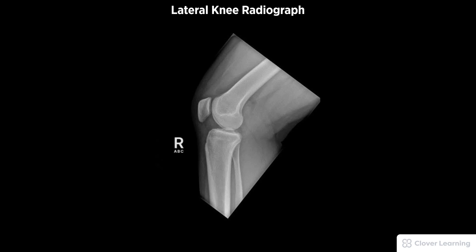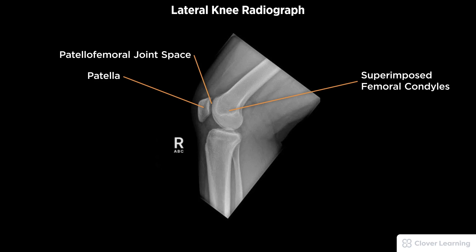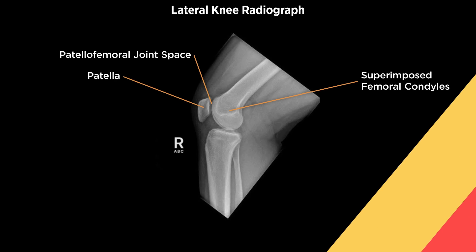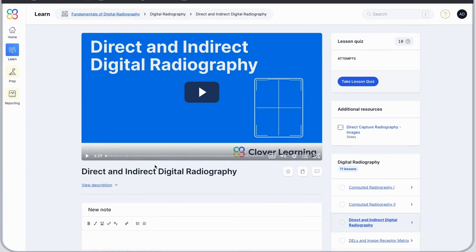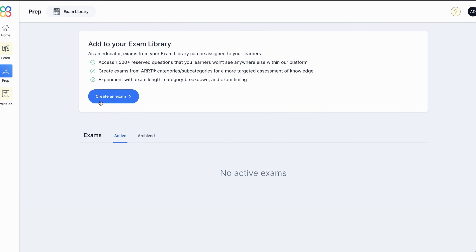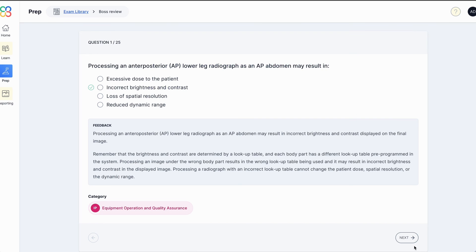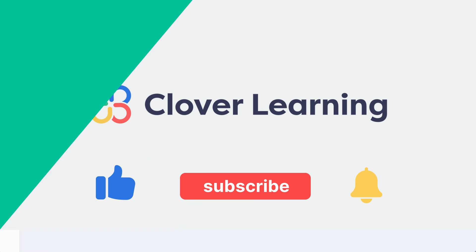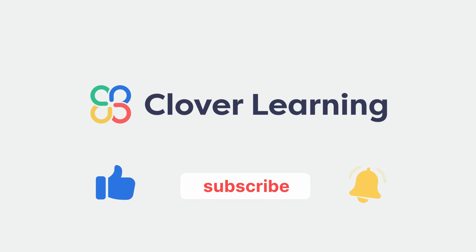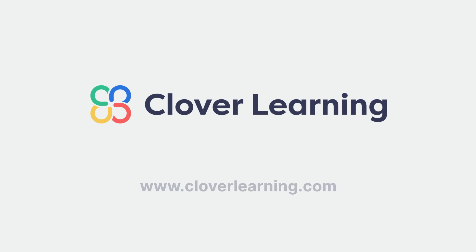A diagnostic lateral knee radiograph must be free of motion and rotation, demonstrating superimposed femoral condyles, patella in profile, and an open patellofemoral joint space with proper visualization of soft tissue and bony detail. If you enjoyed this video, visit cloverlearning.com for video-based courses, certification exam prep question banks, and continuing education resources. Please like, subscribe, and turn on notifications to stay up to date on our latest videos.